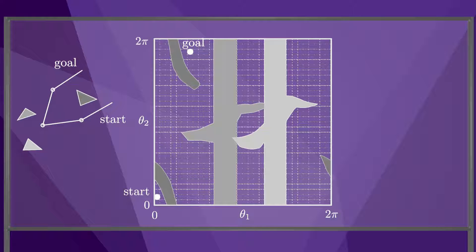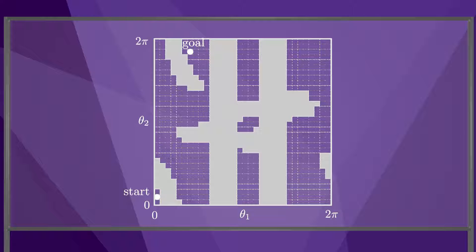If we add obstacles to the scene, the corresponding C space obstacles can be made conservative by marking every C space grid cell they touch as an obstacle.